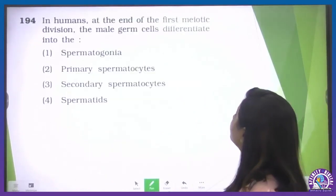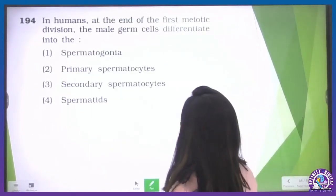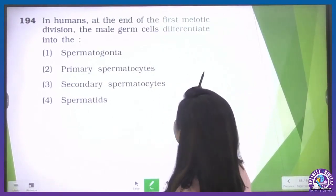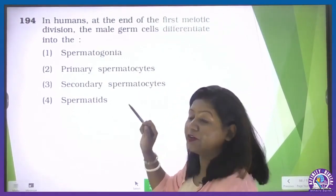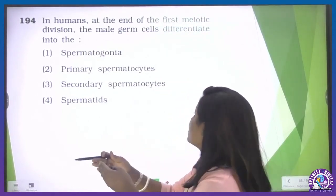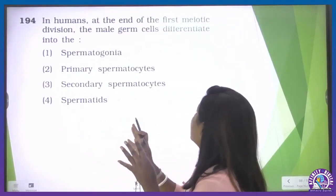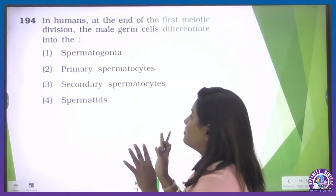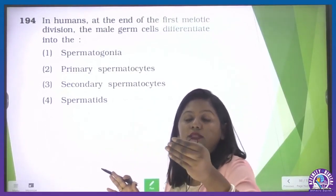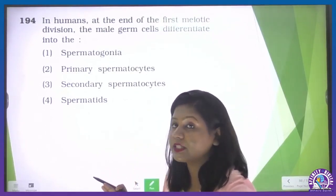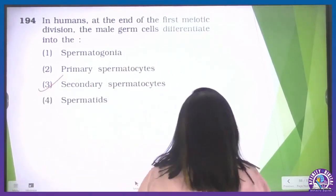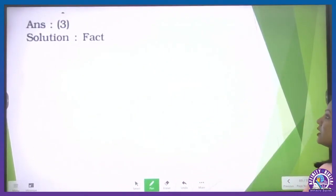In humans, at the end of the first meiotic division, the male germ cell differentiates into secondary spermatocyte. The primary spermatocyte undergoes the first meiotic division to form the secondary spermatocyte. The secondary spermatocyte then completes the second meiotic division to form spermatids. So the third option is our correct one.